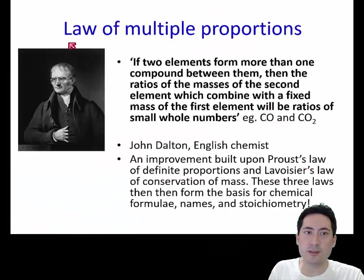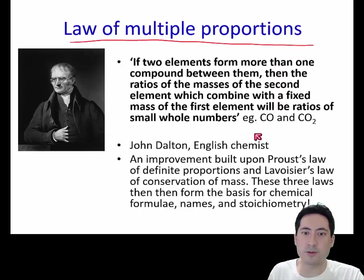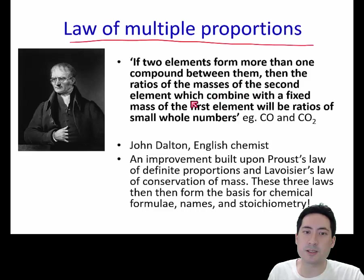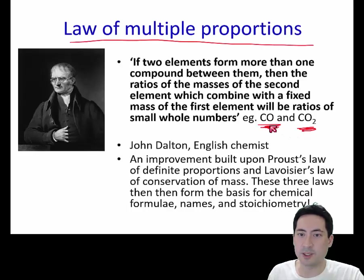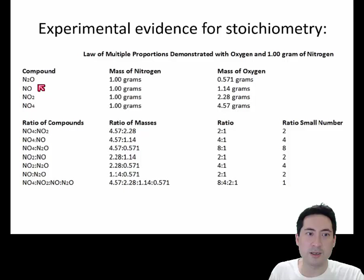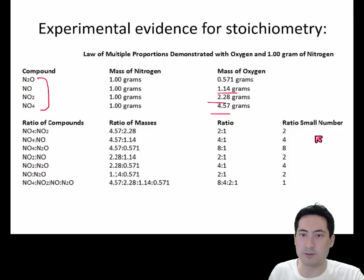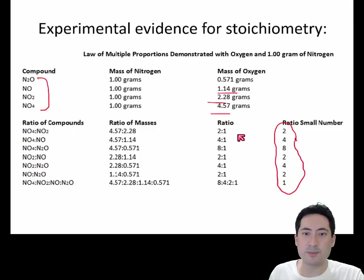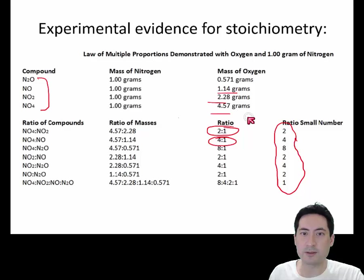Getting more onto stoichiometry now — the law of multiple proportions, suggested by Dalton. If two elements form more than one compound between them, then the ratios of masses of the second element that combine with a fixed mass of the first element will be ratios of small whole numbers. They were doing experiments and working out that there were these number ratios, comparing masses of compounds and seeing that these things went up in whole number ratios. These ratios are basically what we base our stoichiometry on — when we see an equation, we use these ratios to work out how many particles have reacted.